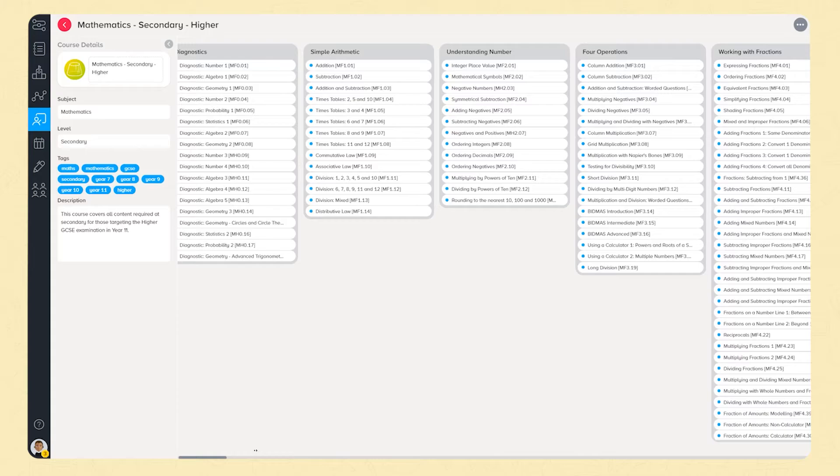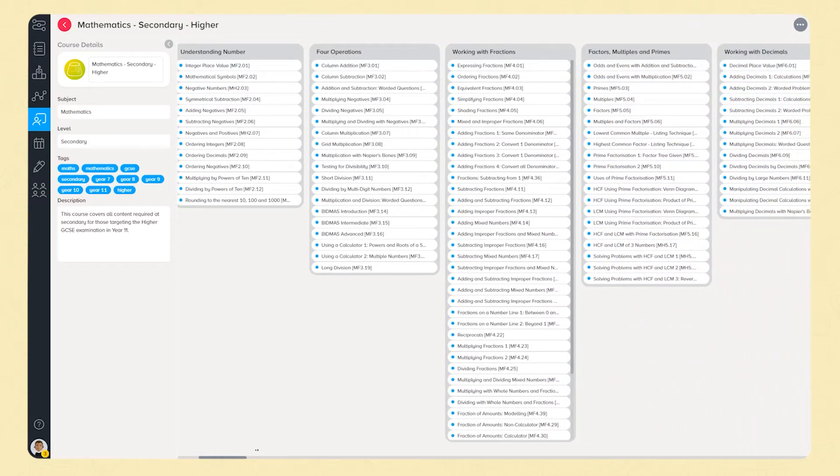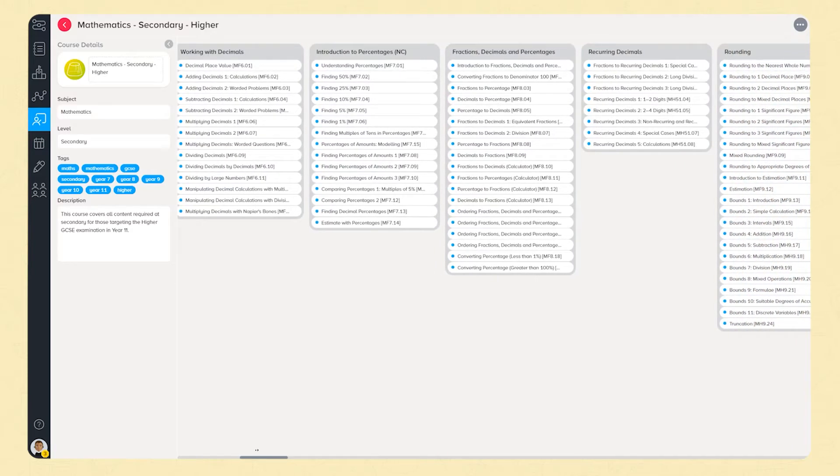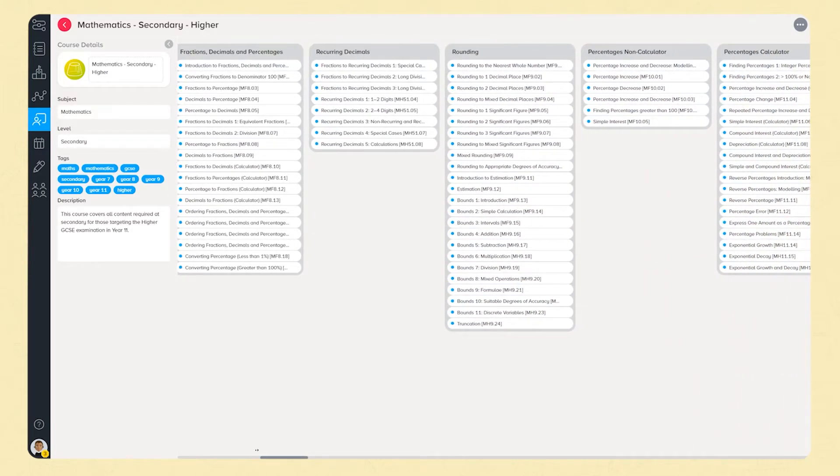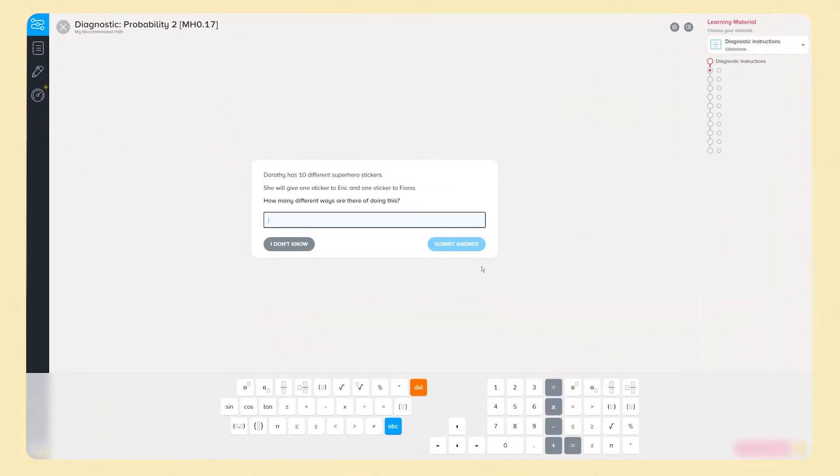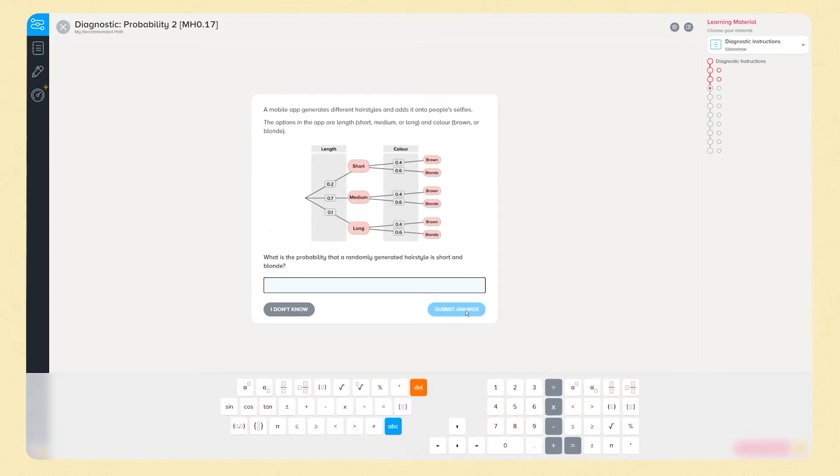Our higher course contains every foundation and higher topic in the GCSE specification and consists of approximately 1,000 nuggets. It is suitable for all exam boards. The higher course builds on the foundation course with an additional 10 diagnostics, assessing learners across the full range of abilities and in every topic.